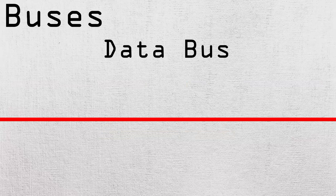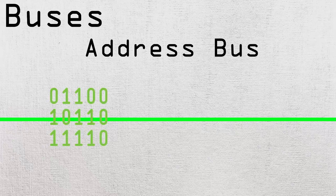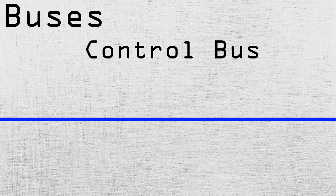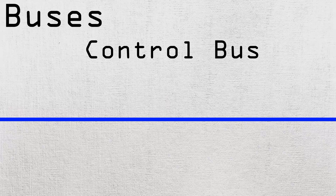The data bus carries data such as numbers or text throughout the CPU, on which the CPU can then perform computations. The address bus carries addresses of information in the RAM — this tells the CPU where information is located and where to jump to if needed. Finally, we have the control bus. This is the bus that carries control signals that can read and write. For example, if the control bus is carrying the write signal, the CPU knows that it needs to store data into that address.